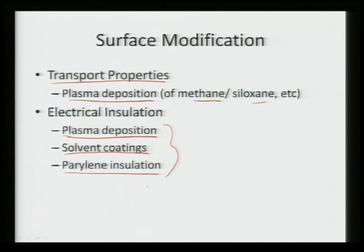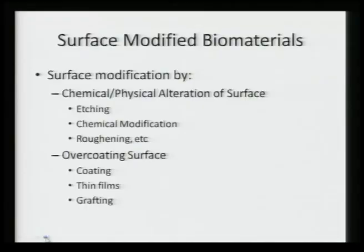So we can see we can apply certain techniques for either improving wear resistance, corrosion resistance, transport properties, lubricity, or providing electrical insulation. These surface modifications become very critical in terms of dictating the functionality or the overall surface interaction of the device with nearby tissues, the environment, or even the fluid around it. There are certain techniques which can be utilized for modifying the surfaces of biomaterials.